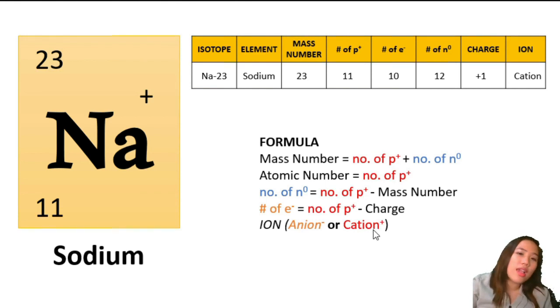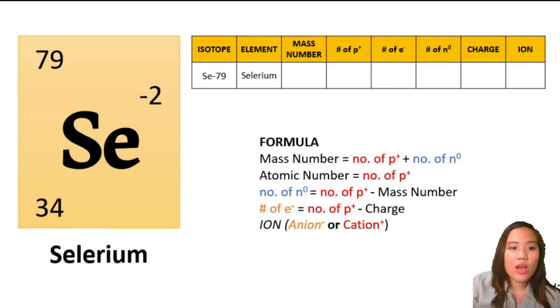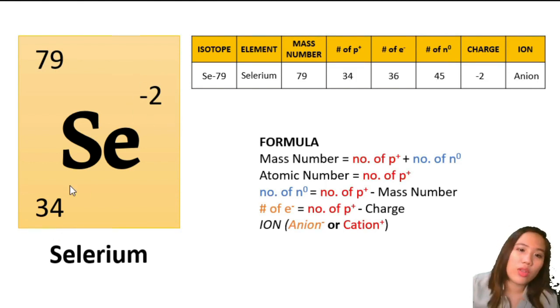Next example, we have selenium. We have the mass number of 79, the atomic number or proton number of 34, and we also have the negative 2 charge. We have the 79 for mass number and 34 for the number of protons.